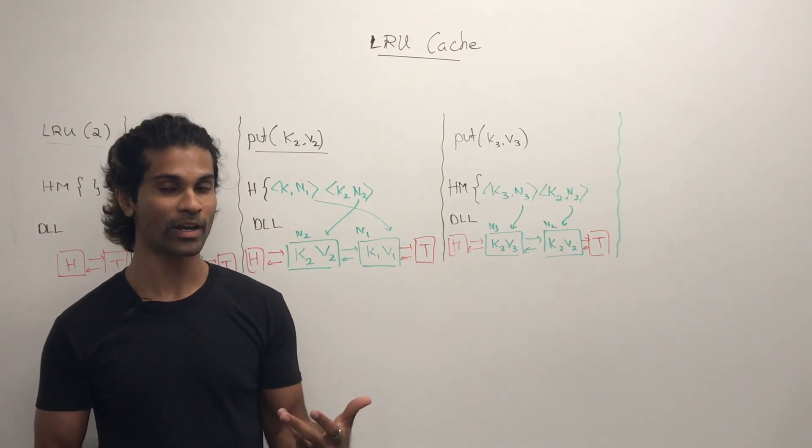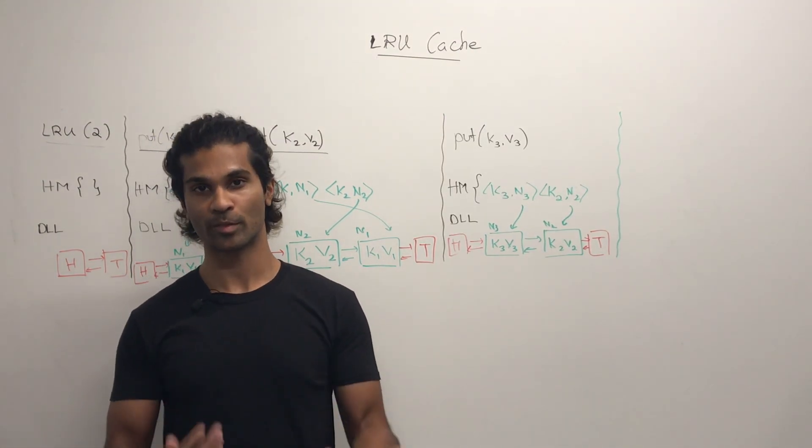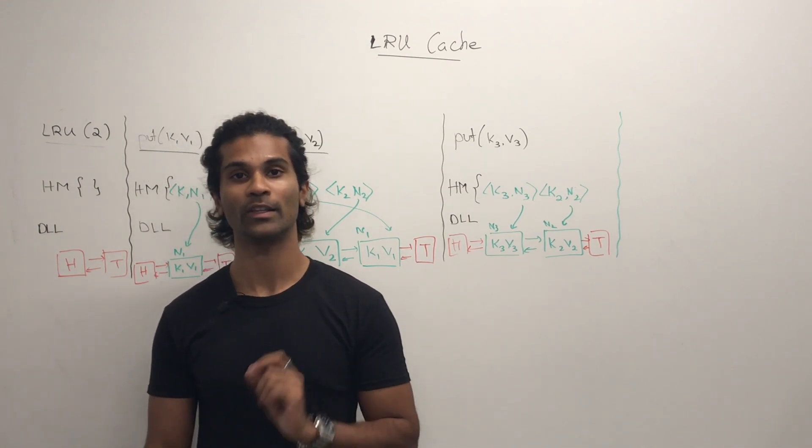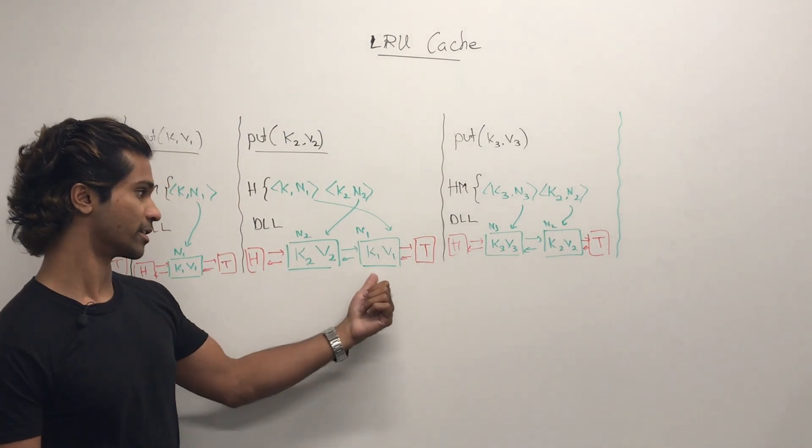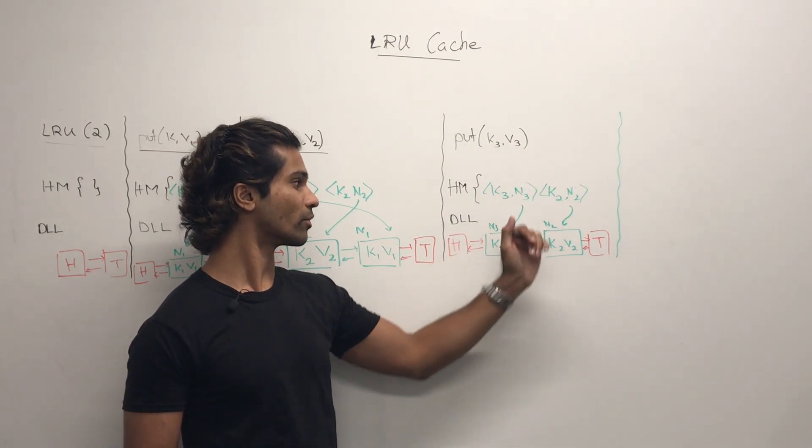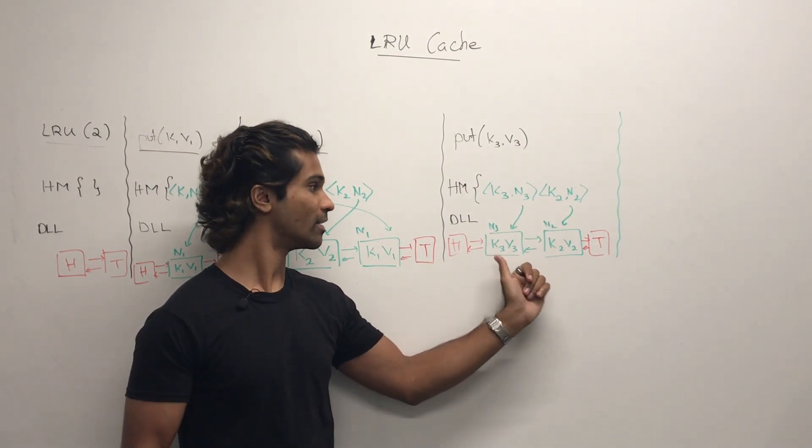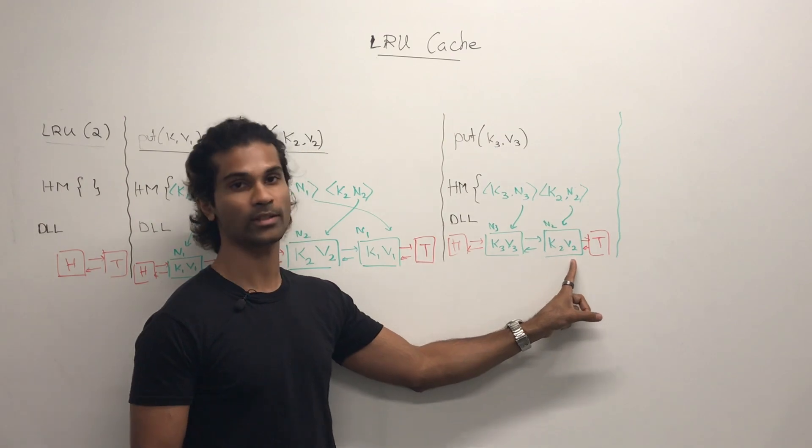When I try putting a third entry, we reach our maximum size, so we have to kick out the least recently used. In this case, it's going to be k1v1 and then we put k3v3 at the top to the head and then we move the previous one to the tail.